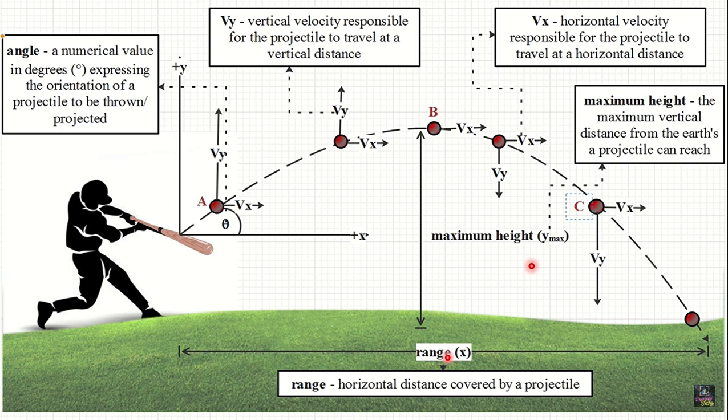The range is the horizontal distance covered by a projectile. In the previous discussion, it was just a horizontally launched projectile — meaning those objects that were launched by simply pushing them forward, horizontally. We did not throw them up or kick them up. That's the reason why it is considered a horizontally launched projectile.